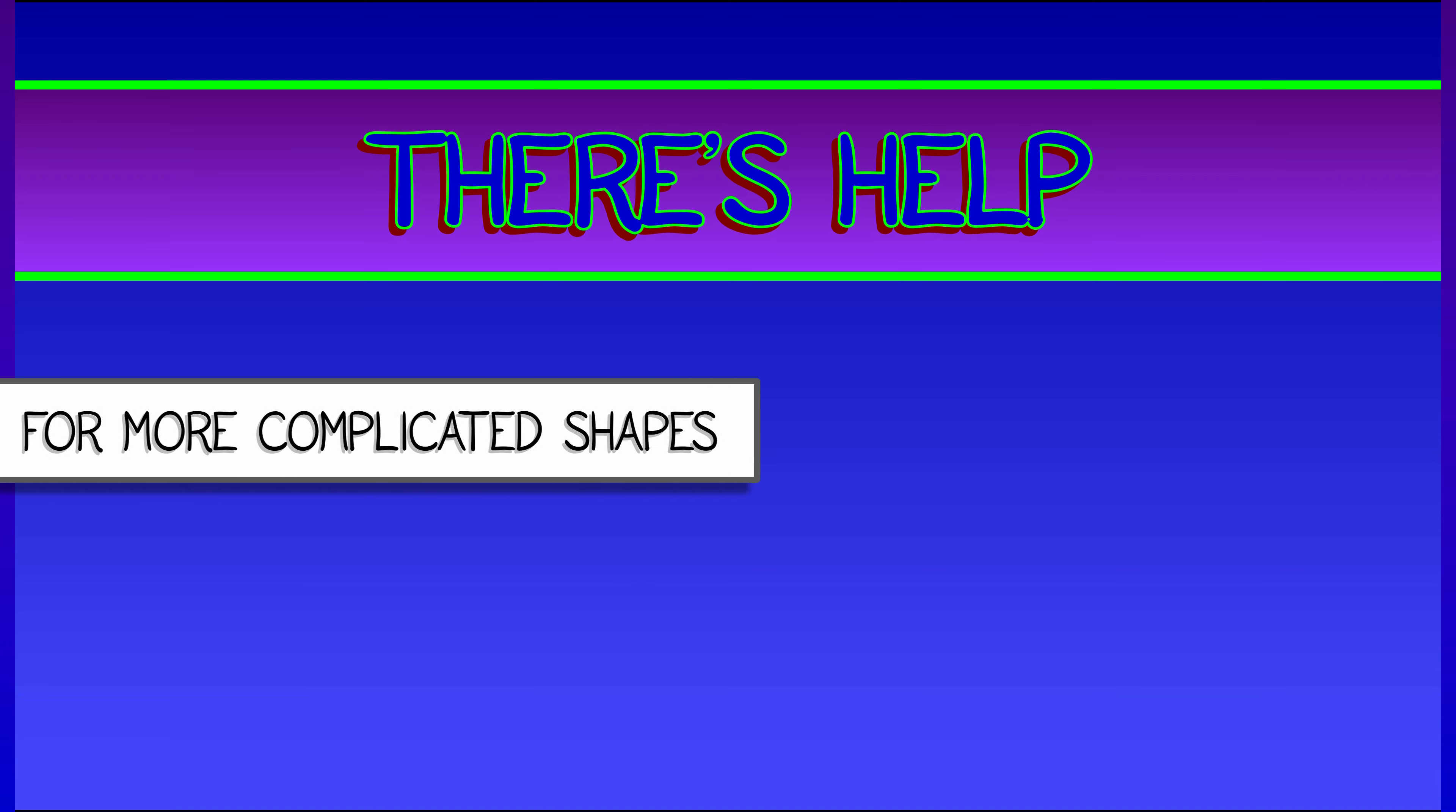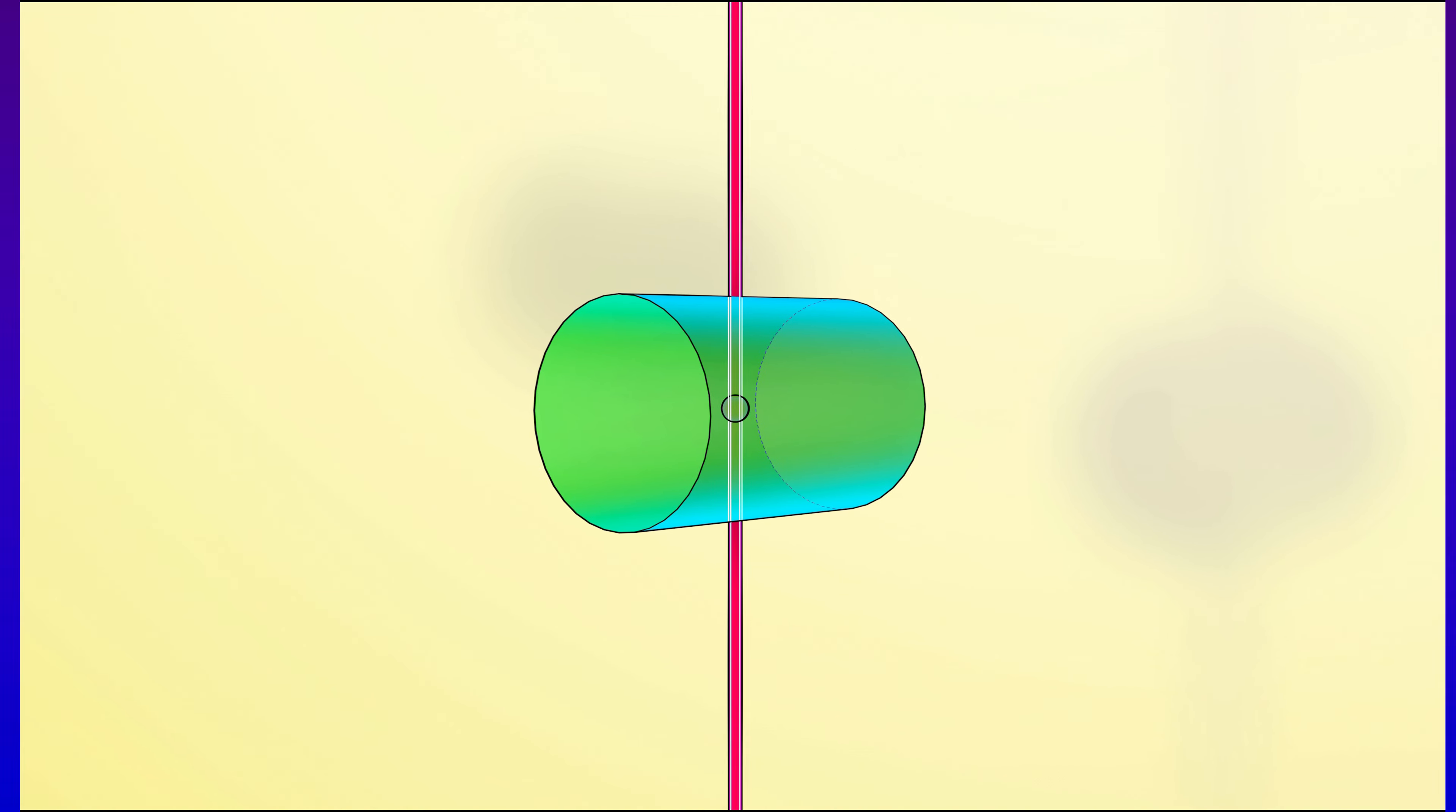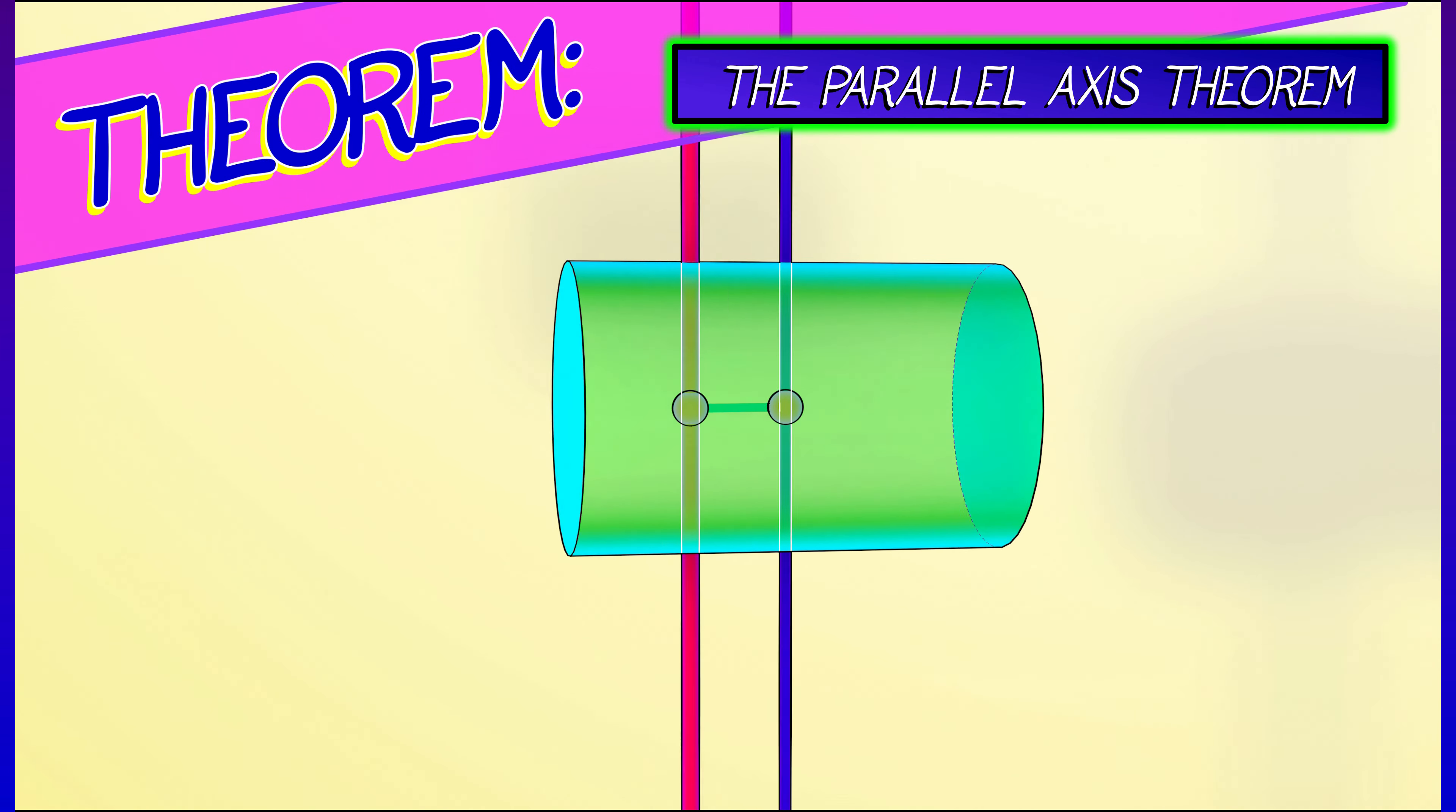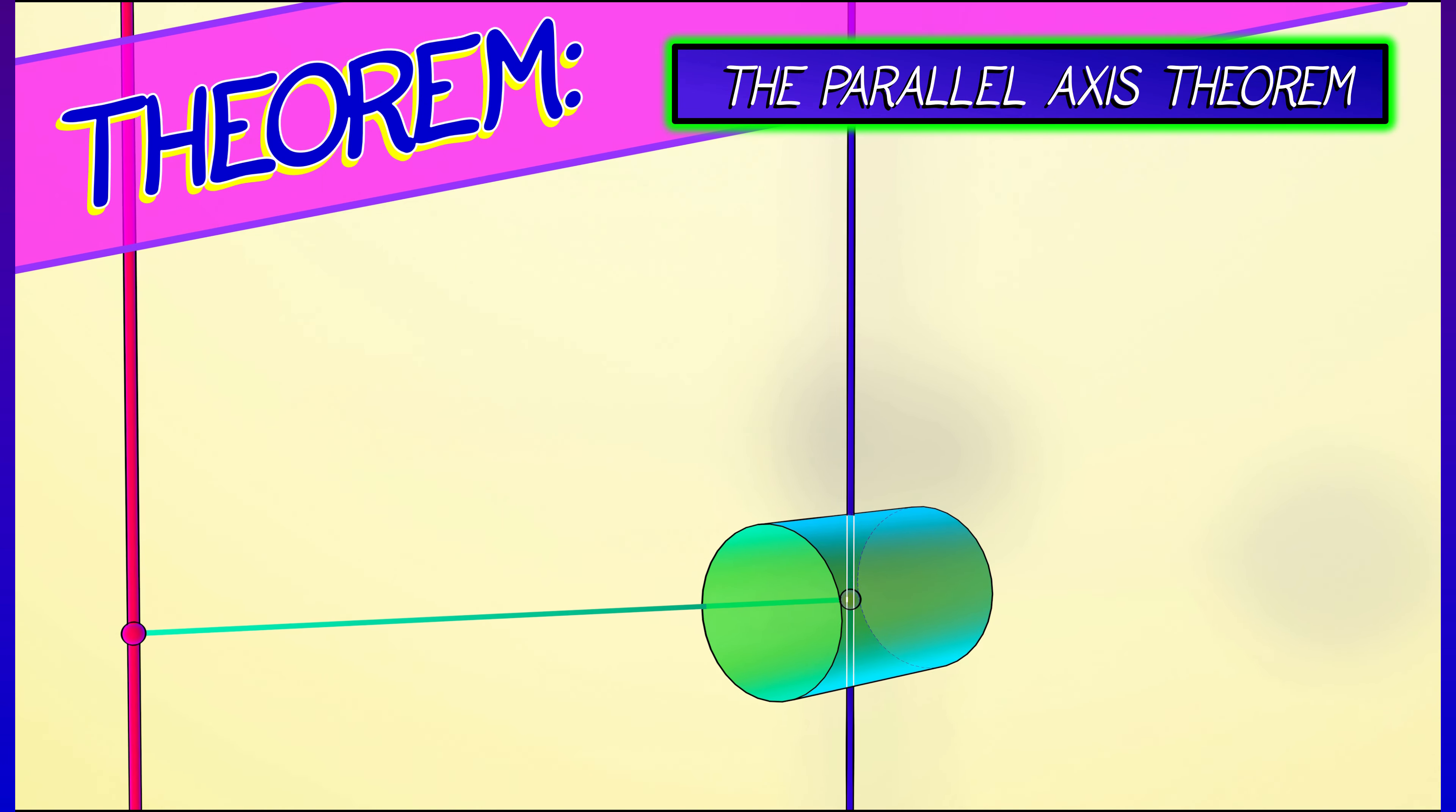When it comes to computing moment of inertia of complicated bodies, there's help. Help comes in the form of a theorem, a wonderful theorem called the parallel axis theorem. Here's the setup. You've got a body, and you're rotating it about an axis that goes through the center of mass. Now you want to know what happens if you translate that axis, keeping it parallel. How does the moment of inertia change?